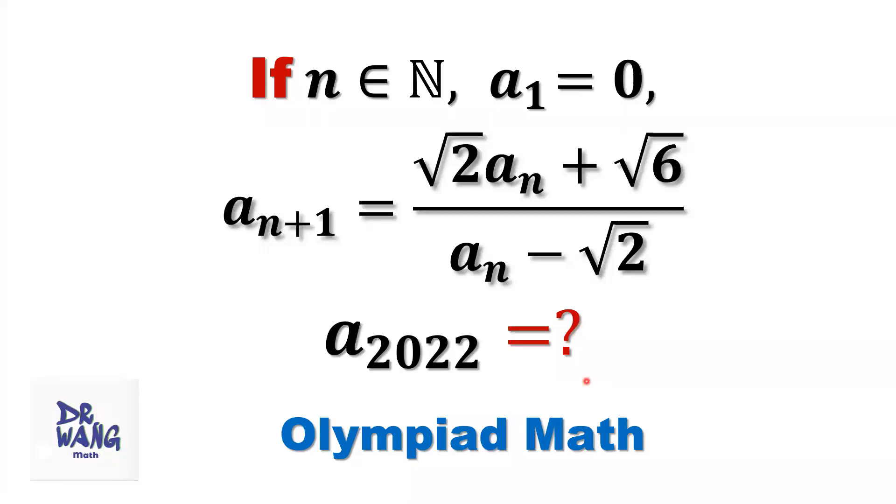Hello everyone, I'm Dr. Wen. Here is the question. Consider a sequence An starts from A1. A1 equals zero. Here's a recursion formula. Use current term to define the next term. That means use nth term to define n plus 1th term. This formula is called a recursion formula. We want to find A2022.